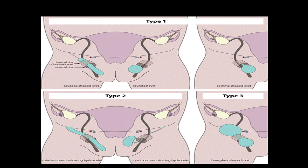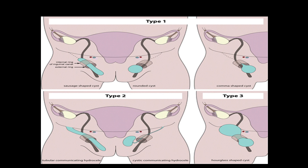The case discussed above was Type 3. The various differentials to consider in a female with an inguinal mass include indirect inguinal hernia, tumors such as lipoma, leiomyoma and sarcoma, cysts such as Bartholin's cyst, abscesses, and lymphadenitis — all of which were excluded in the above discussed case.